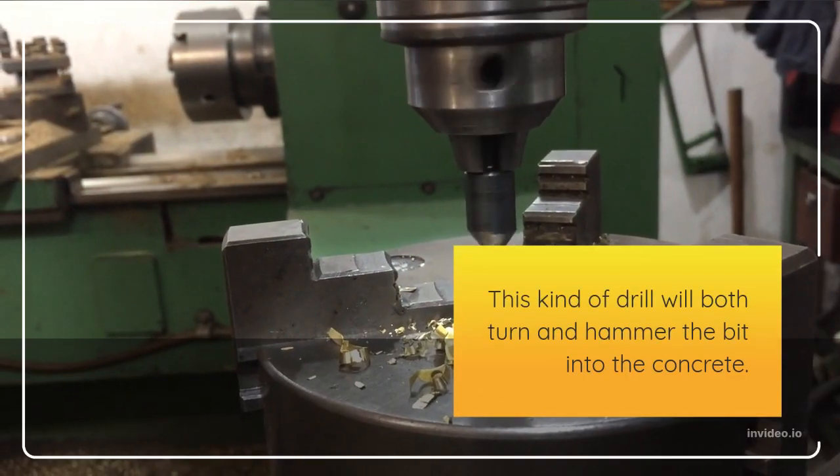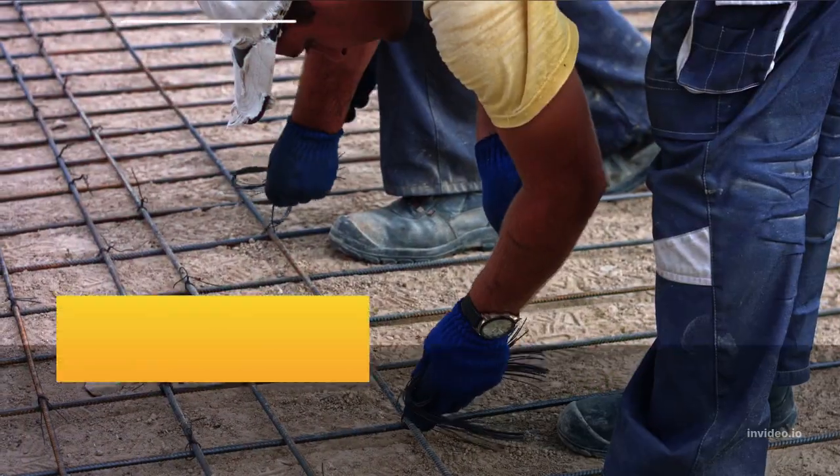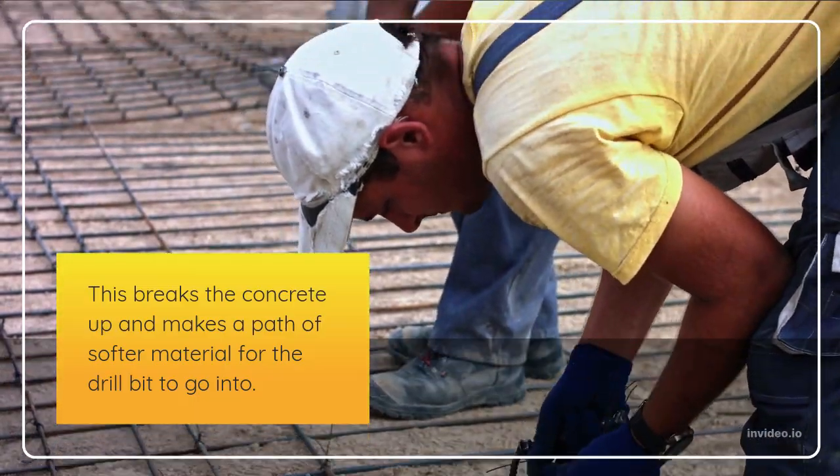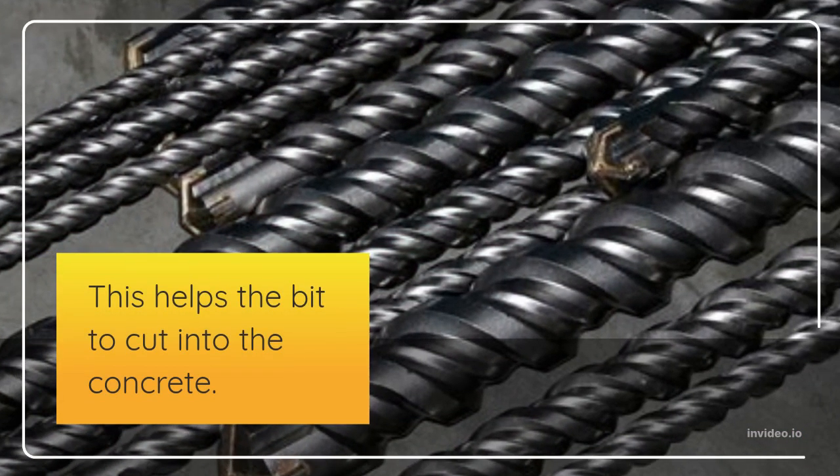This kind of drill will both turn and hammer the bit into the concrete. This breaks the concrete up and makes a path of softer material for the drill bit to go into, which helps the bit to cut into the concrete.